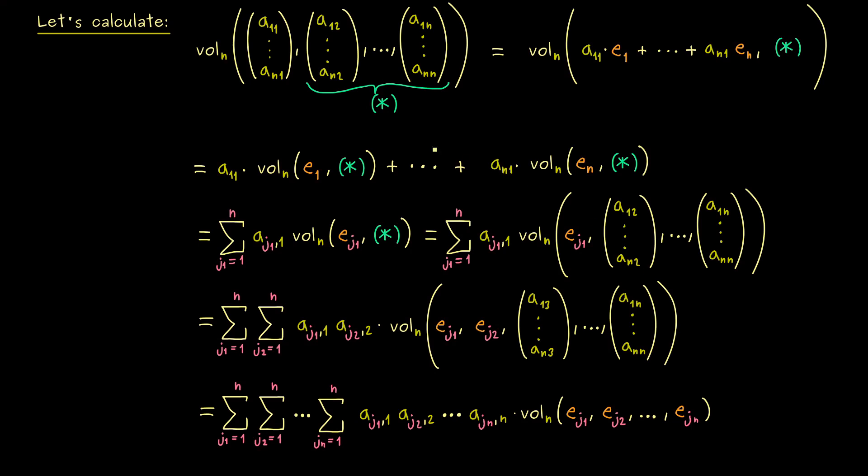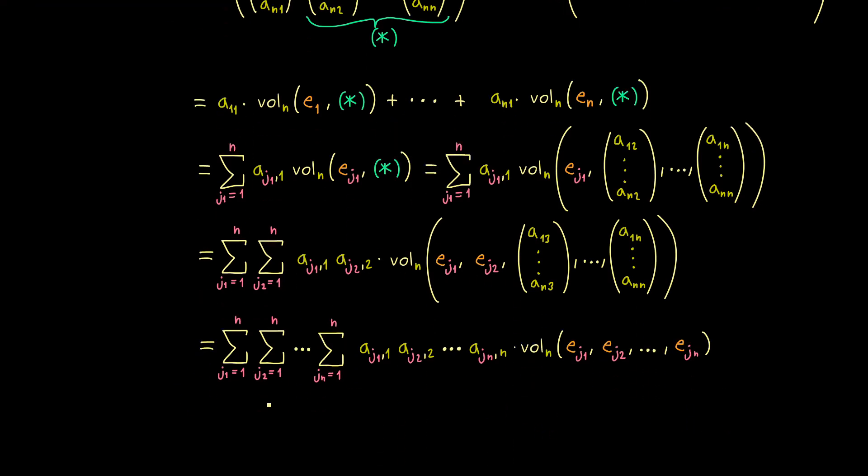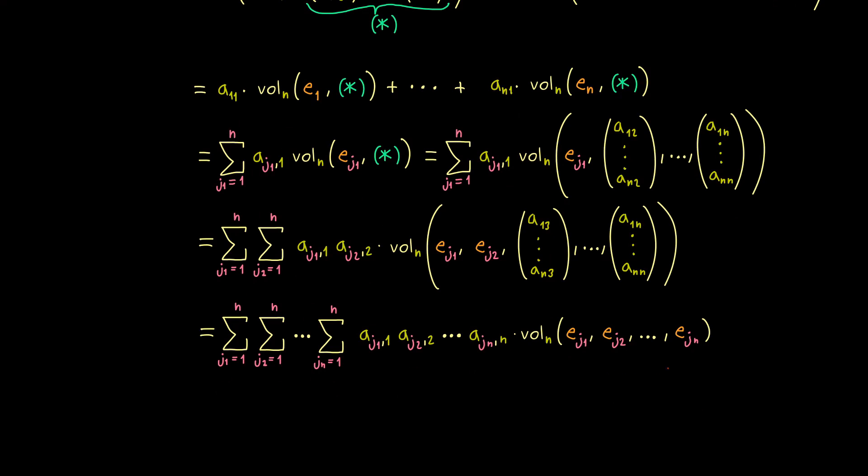However, you know we also have the two other rules, so we can simplify this even more. For example, our anti-symmetric rule tells us that the volume form is 0 in the case that two entries coincide.